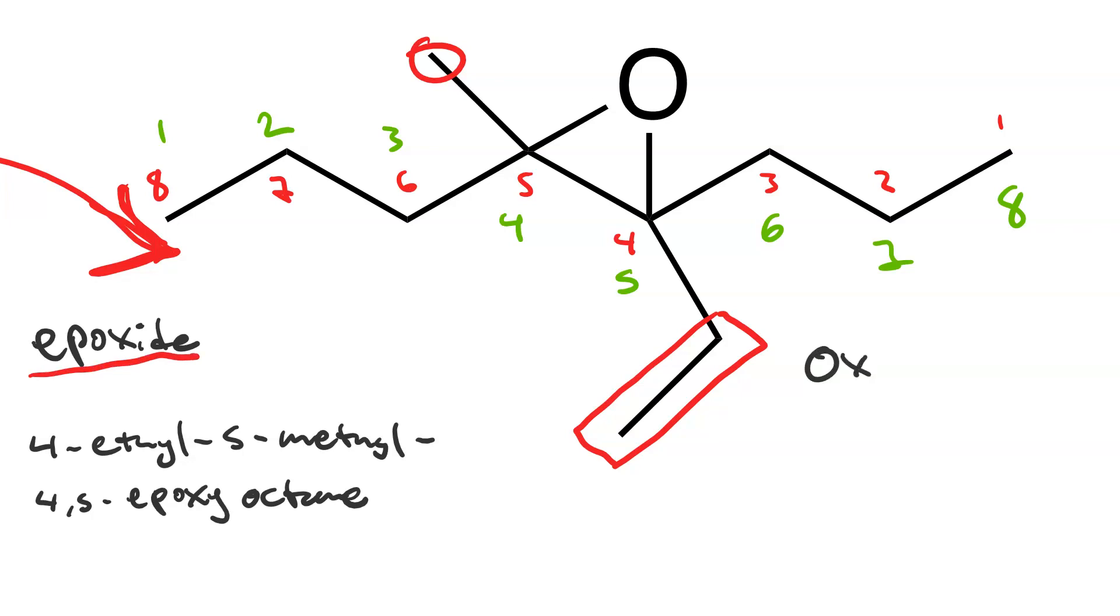To name it as an oxirane, again, since ethyl comes before methyl, we're going to number. The oxygen is number 1 always. And then carbon number 2 will be the one attached to the ethyl, and carbon number 3 will be the one attached to the methyl.